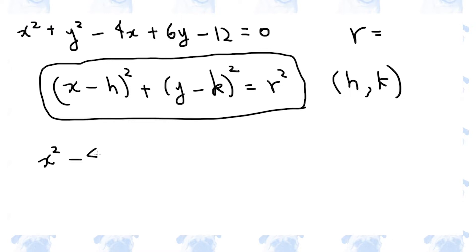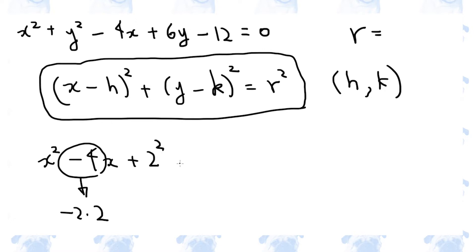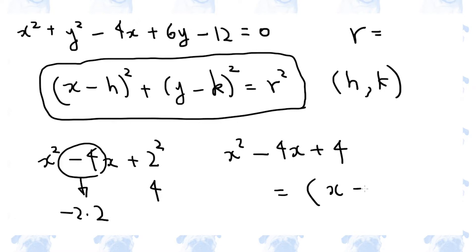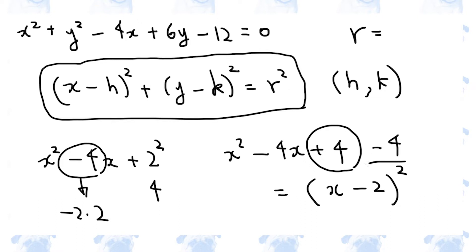Let's begin with x. Since minus 4 is minus 2 times 2, we need 2 squared, which is 4. And x squared minus 4x plus 4 is (x minus 2) squared. But because we added this plus 4, the value of the left-hand side has changed, so we need to subtract 4 as well.